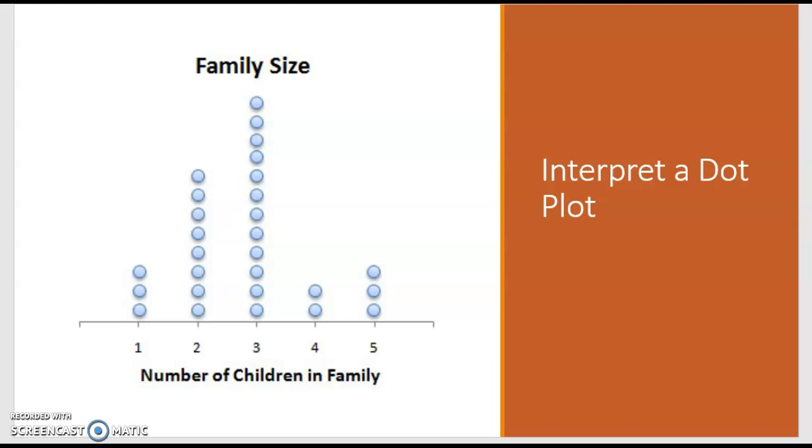What is the least common? Four, which kind of surprises me. I feel like five would be less common than four, but not according to this dot plot. It's kind of symmetric in that the tallest bar is in the middle and then it fans out in either direction. Those are some of the interpretations. When you're interpreting a graph, whether it's a dot plot or something else, it simply means what information can you draw from the graph itself.